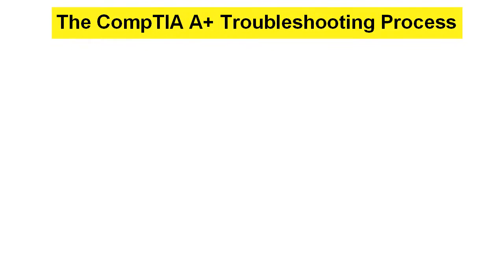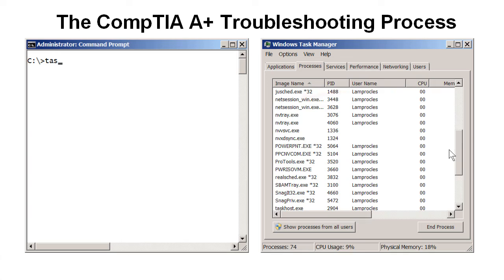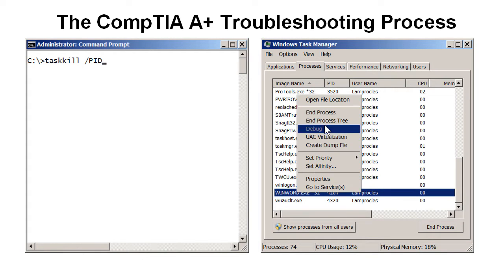The CompTIA A+ troubleshooting process can be very helpful when it comes to repairing computer issues. For example, fixing an IP configuration problem, or perhaps ending a process so that a non-responsive application will close.